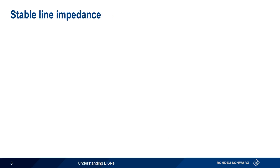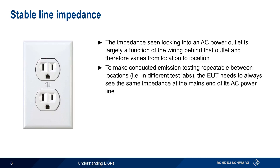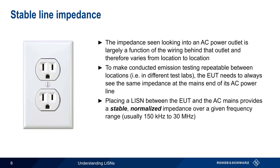A LISN stands for Line Impedance Stabilization Network, so it's helpful to explain what we mean by stable line impedance. The impedance seen looking into a standard AC or mains power outlet is largely a function of the wiring behind that outlet, and therefore this impedance will vary from location to location and from outlet to outlet. This isn't a problem for everyday use, but in order to make conducted emissions testing repeatable between locations — that is, between different labs — the EUT should always see the same impedance at the mains end of its AC power line. Using a LISN between the EUT and the AC mains outlet provides a stable, normalized impedance over a given frequency range, usually 150 kHz to 30 MHz.